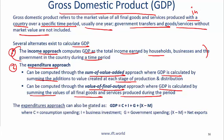The expenditures approach can be stated as follows: GDP equals consumption plus investment plus government spending plus net exports (X minus M). This is a very important relationship you must remember.